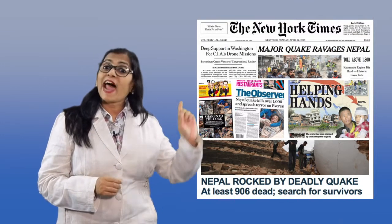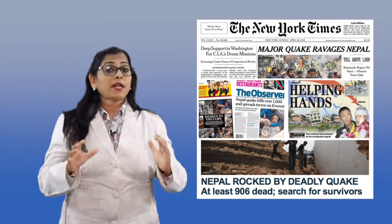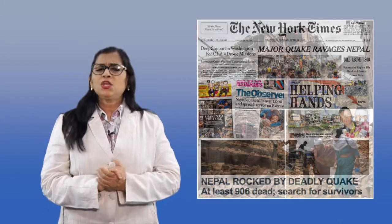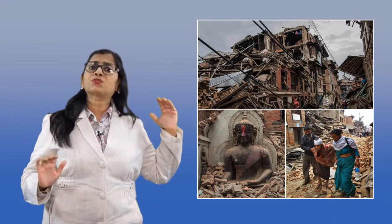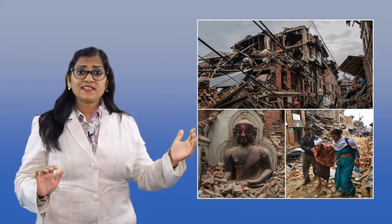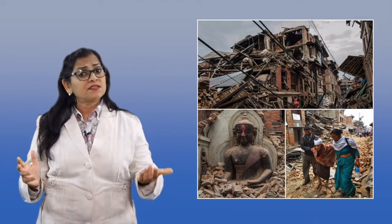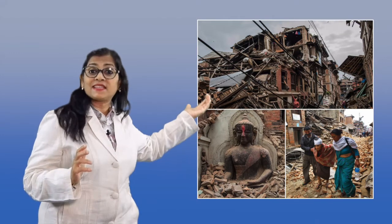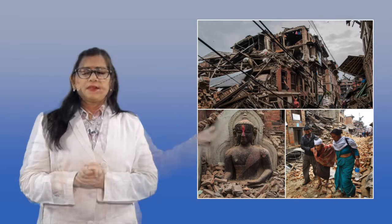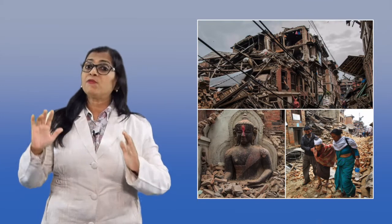There is loss of life and property on account of earthquakes. You must remember the earthquake that took place in Nepal in the year 2015. So many people were killed — 9,000 precisely, as seen in the newspaper headline. 22,000 people were injured and many more became homeless. Many World Heritage sites were also destroyed on account of this earthquake, causing huge havoc.